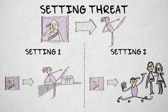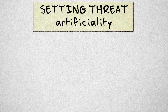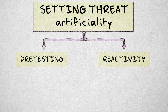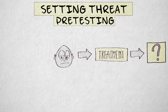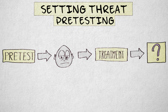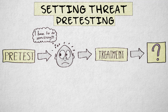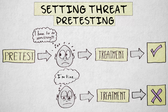There are two setting threats associated with the artificiality of the research setting specifically. These threats are pre-testing and reactivity. A pre-testing threat means that the observed effect is found only when a pre-test is performed. Say we investigate a new therapy for treating depression and use a pre-test. Suppose the depression pre-test makes participants realize how serious their problems are and thereby makes them more receptive to the treatment. The treatment is effective, but only if receptiveness is increased by the pre-test first.